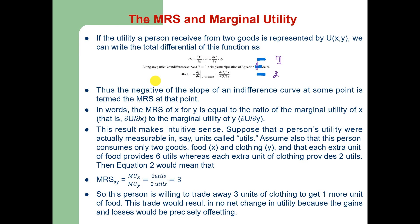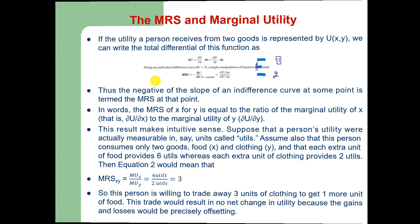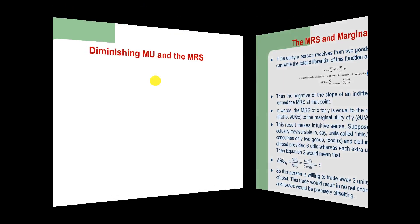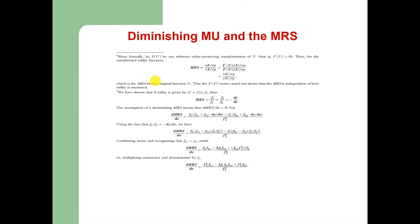So this person is willing to substitute 3 units of clothing to obtain one more unit of food, and this trade results in no net change in utility because the gains and losses are precisely offsetting. The marginal rate of substitution between x and y equals 3 and this will not change the utility. Now we relate diminishing marginal utilities to the marginal rate of substitution.